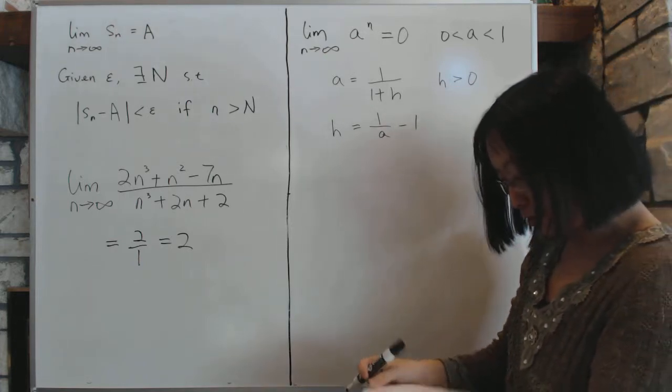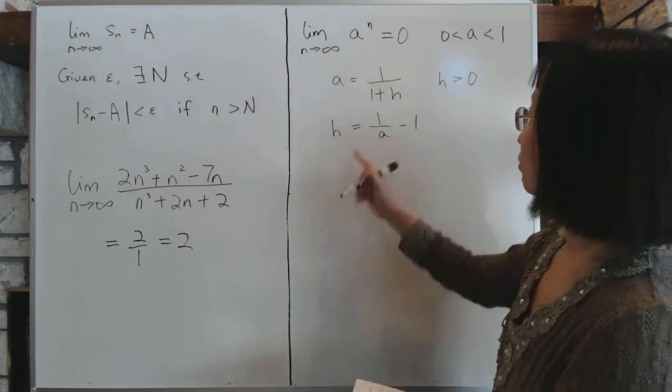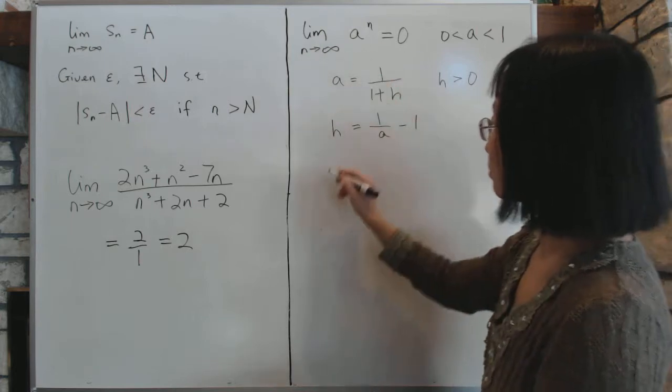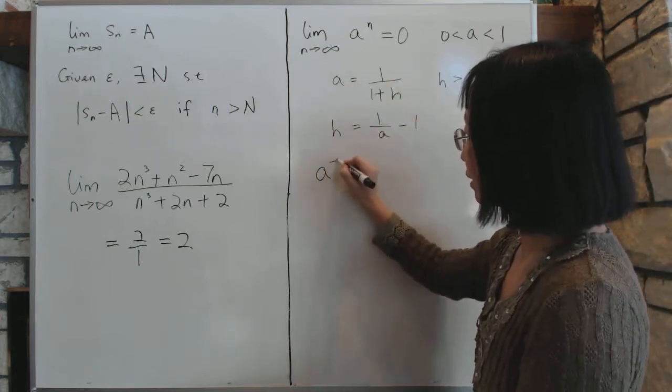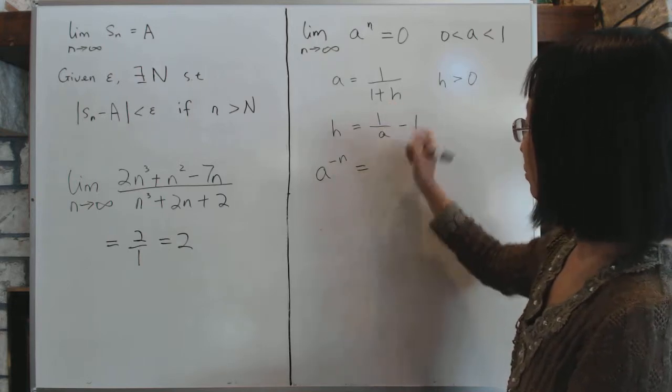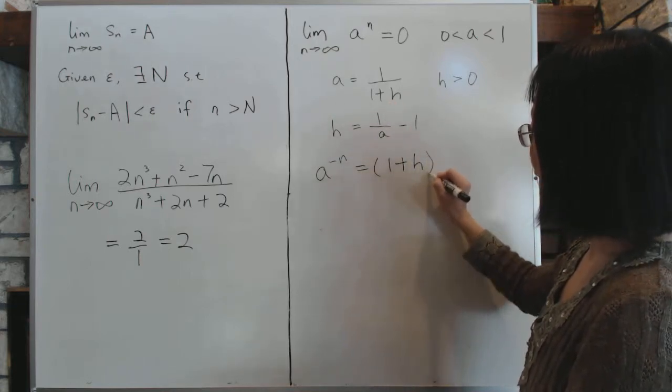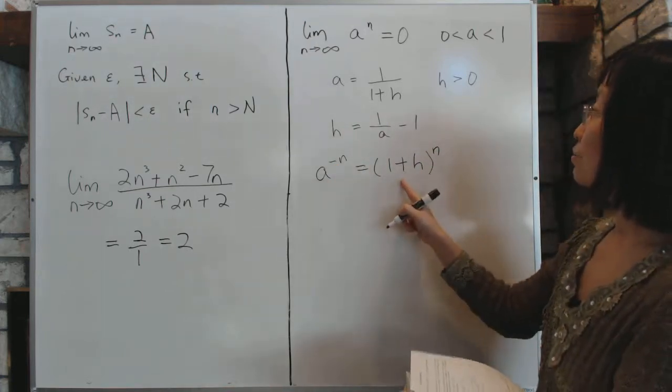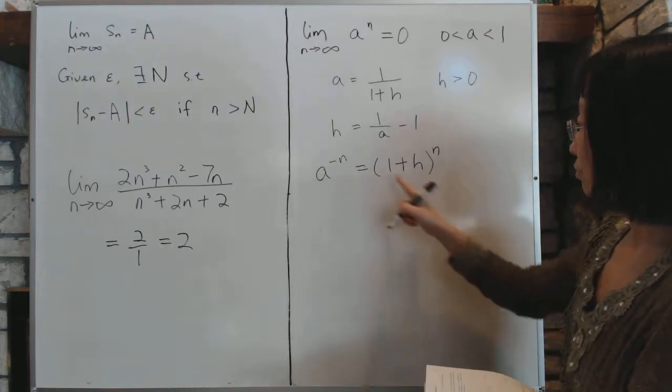Now, how are we going to use this? Once we have this, we're going to do this. So a to the power n, based on this relationship then, a to the power negative n, notice I said negative, is simply equal to this thing right here, 1 plus h to the power n, because I chose a negative sign there. So this becomes a positive value.